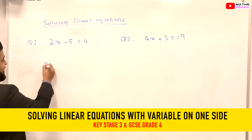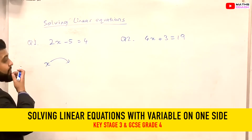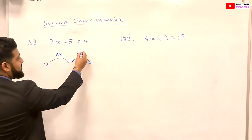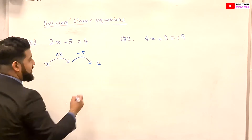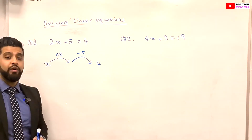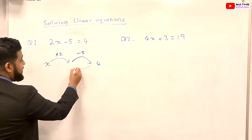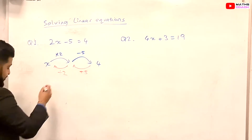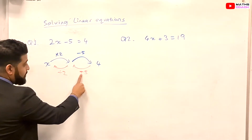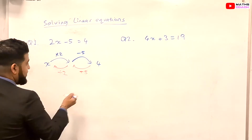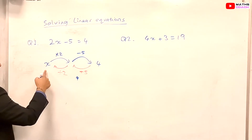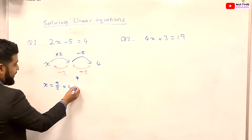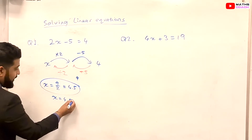Let's start with the first method — the flowchart. So x is being multiplied by 2 first, and then we do minus 5, and that gives us a value of 4. We are going to do the backwards operation of all this: minus 5 becomes plus 5, and times by 2 becomes divided by 2. So 4 plus 5 gives us 9, and then 9 divided by 2 gives us x. So x is equal to 4.5.